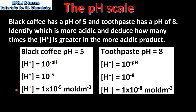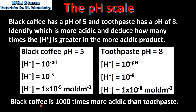So which is more acidic? The pH of the black coffee is lower than the pH of the toothpaste, therefore the black coffee is more acidic. The second part of the question asks how many times greater is the hydrogen ion concentration. Black coffee with the lower pH has the higher concentration of hydrogen ions, so an increase in hydrogen ion concentration from 10 to the negative 8 to 10 to the negative 5 represents a thousand times increase. Therefore black coffee is a thousand times more acidic than toothpaste.